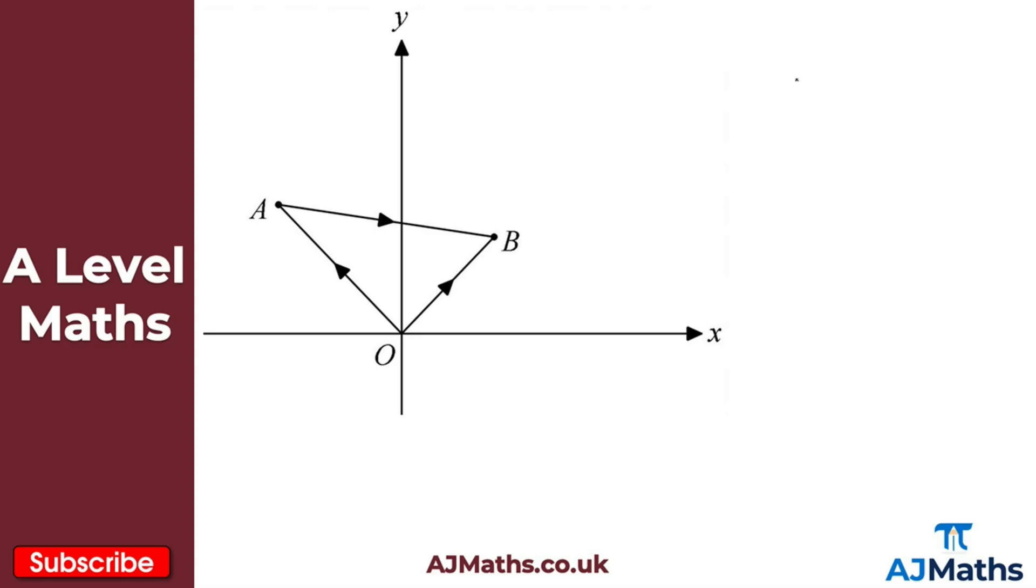For example, here the position vector of a point P would be the vector OP, where O here is the fixed origin. Now what I've got here is just a little diagram which will help illustrate the idea behind position vectors.